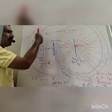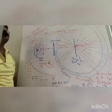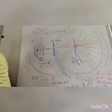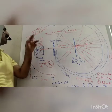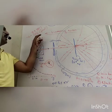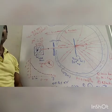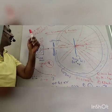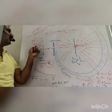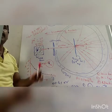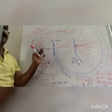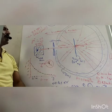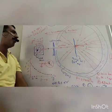The alpha particle is the helium nucleus. In this helium nucleus there are two protons and two neutrons. This alpha particle has a mass of 4 atomic mass units and a charge of plus 2e — that is, the alpha particle carries a positive charge. This is the experiment in Rutherford's nuclear atomic model.